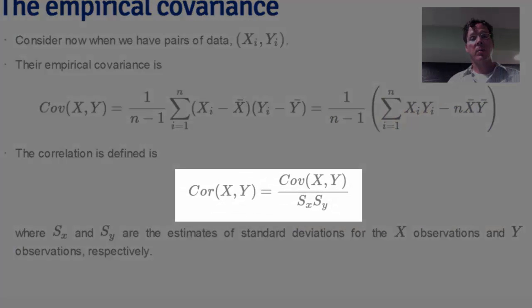The correlation is simply the covariance then standardized into a unitless quantity. So the correlation is the covariance of X and Y, which has units, basically units of X times units of Y, and then we divide by standard deviation of X and standard deviation of Y, and we get a unit-free quantity.